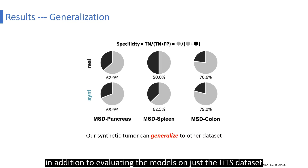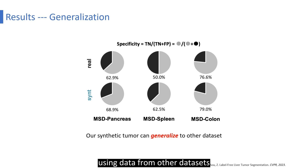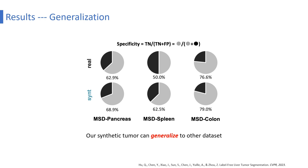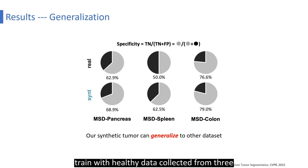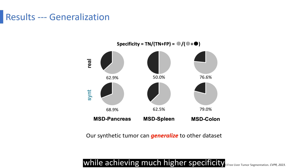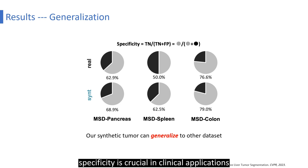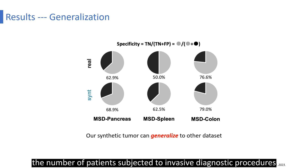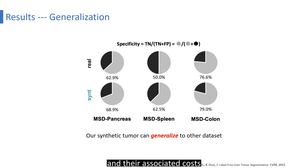In addition to evaluating the models on just the LITS dataset, we assess their domain generalization ability using data from other datasets — for example, MSD Pancreas, MSD Spleen, and MSD Cologne. Our model trained with healthy data collected from three different datasets shows better robustness than the model trained on real data only from LITS, achieving much higher specificity on the three external datasets. Higher specificity is crucial in clinical applications as it reduces the number of patients subjected to invasive diagnostic procedures and their associated costs.